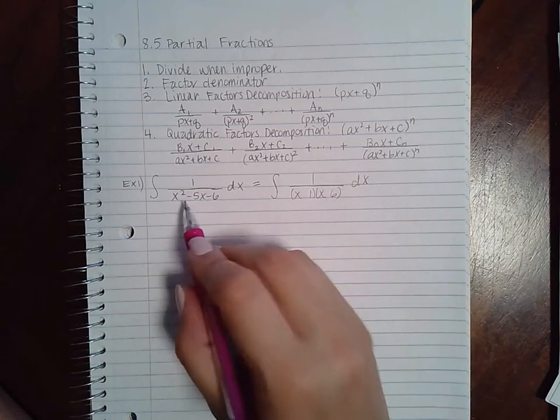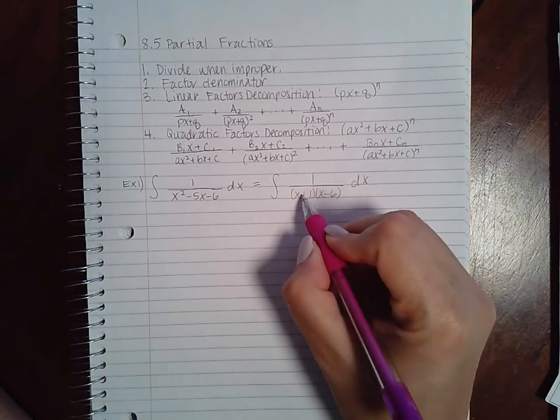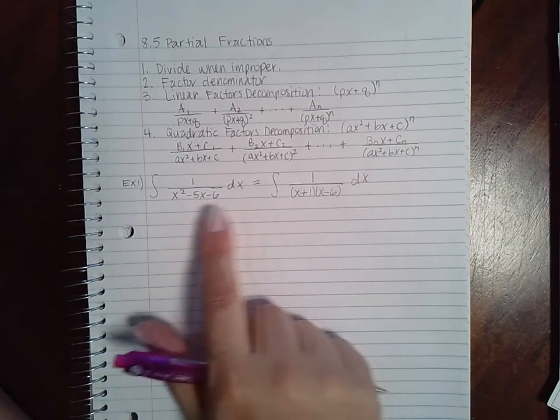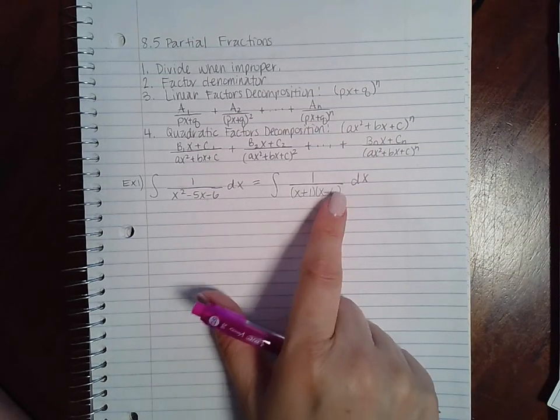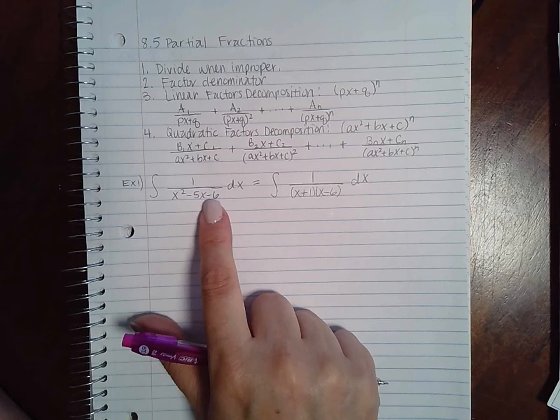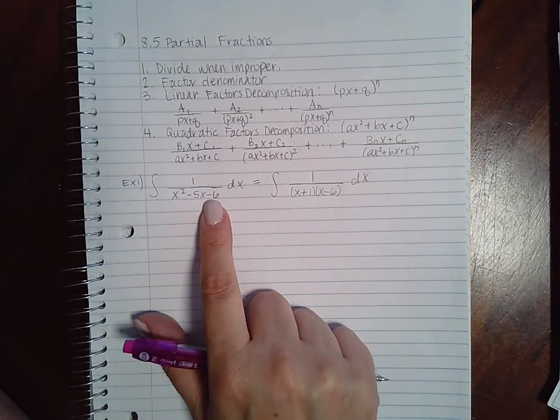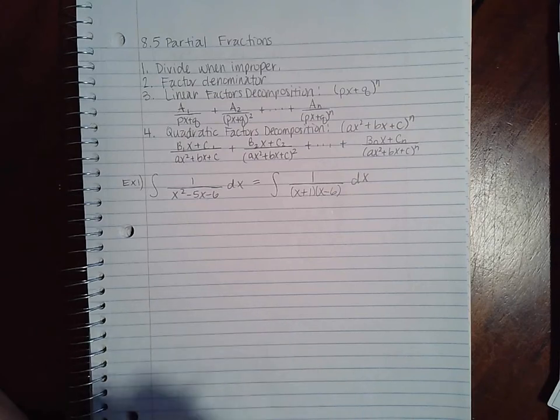And if I have opposite signs, I should still be able to end up with a negative five like that. The biggest mistake with this problem is people will put negative three and negative two, but those don't multiply to give you a negative six. So be careful when you're factoring because if your factoring is wrong, the whole rest of the problem is wrong.